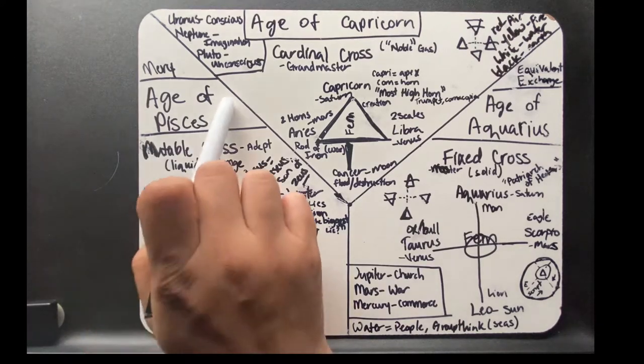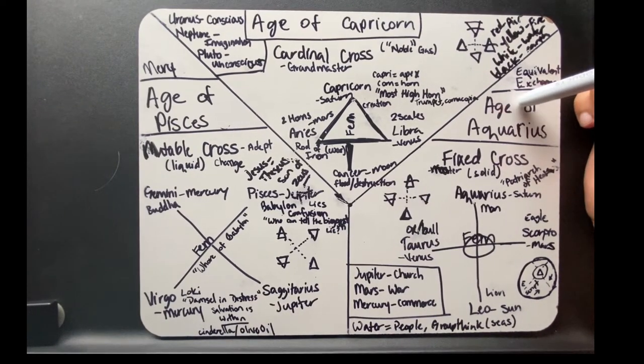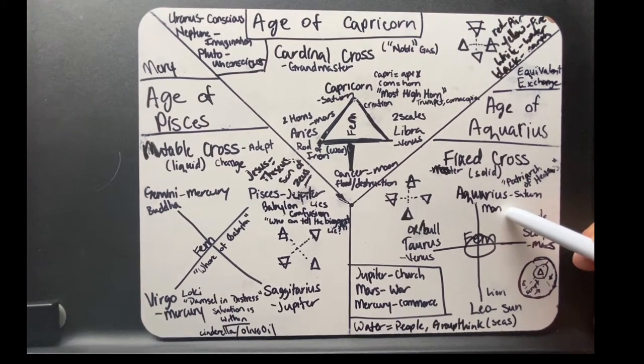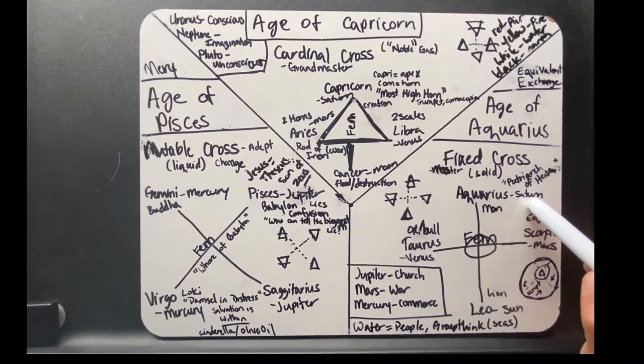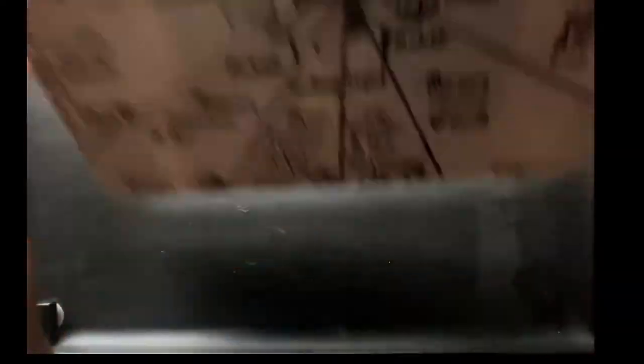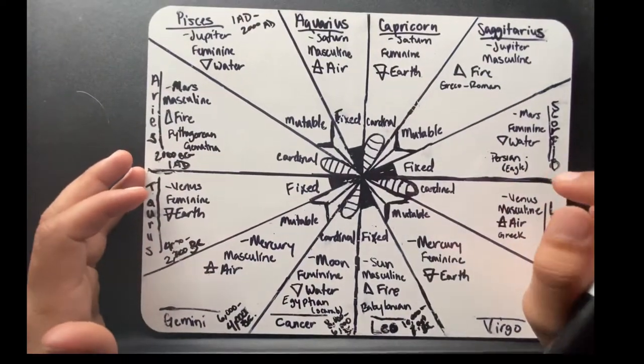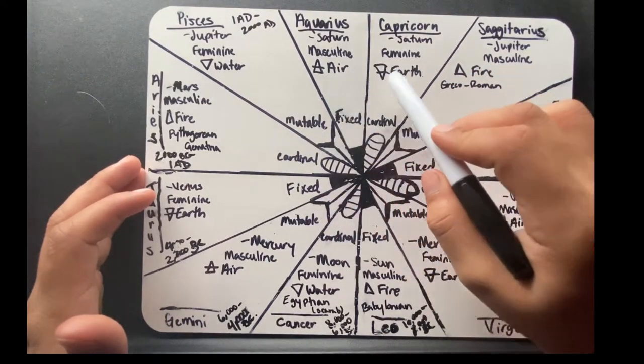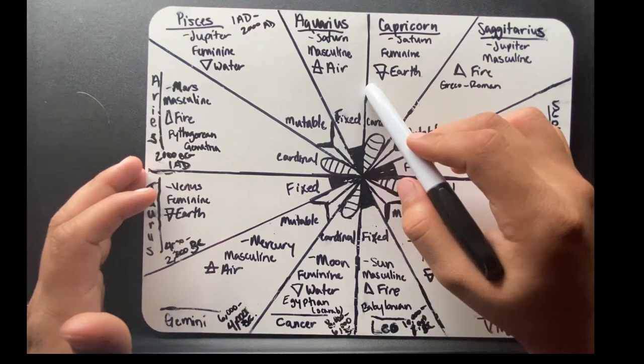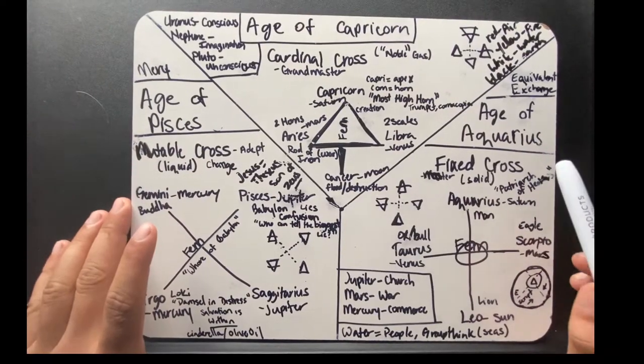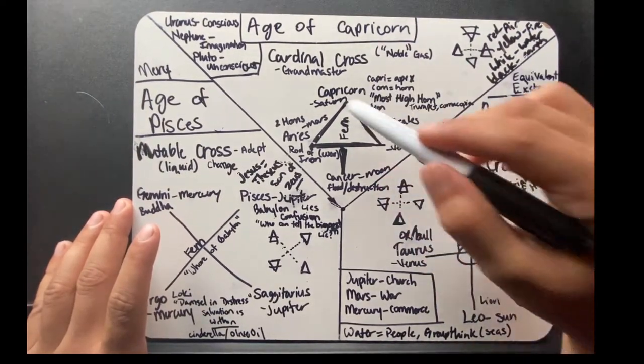So yeah, that's the age we're in, but we are moving into the Age of Aquarius, which is not only on the fixed cross but actually leads the fixed cross. It's also ruled by Saturn. Also notice how Saturn rules Capricorn and Aquarius. Saturn is the only planet to rule two consecutive ages. This is what Levette calls the age with no end. Saturn is also the only one to lead two out of the three crosses.